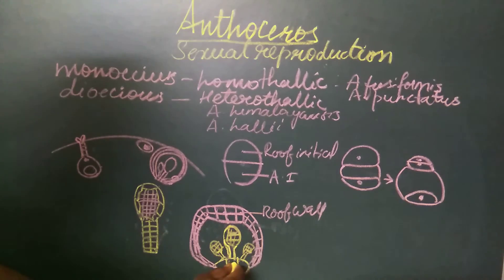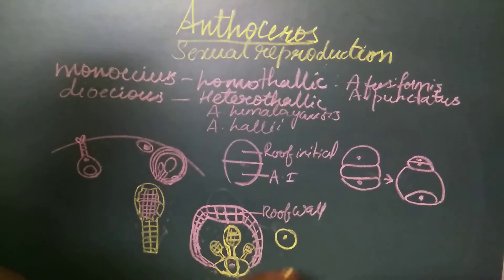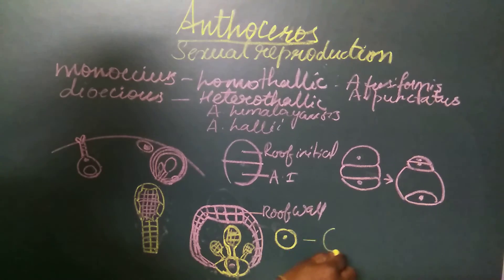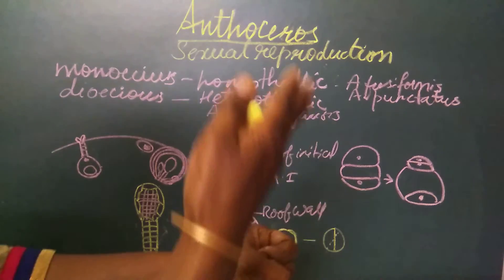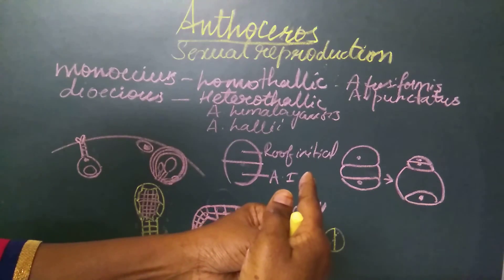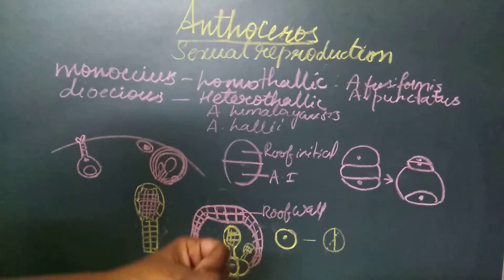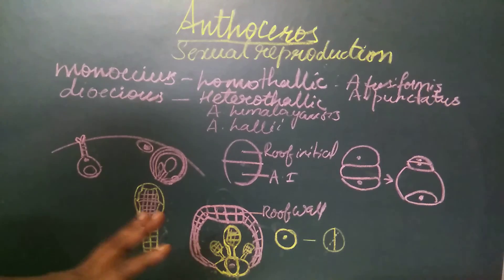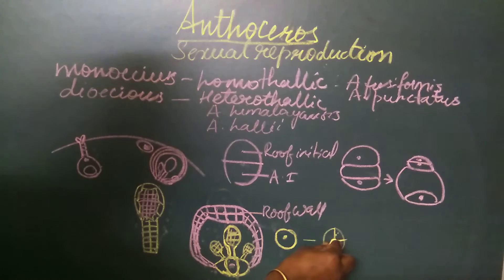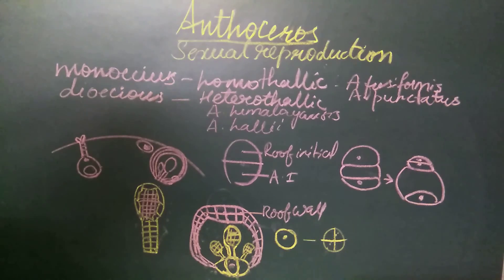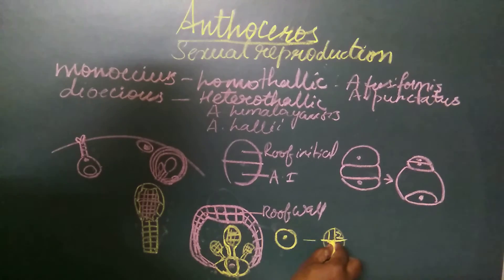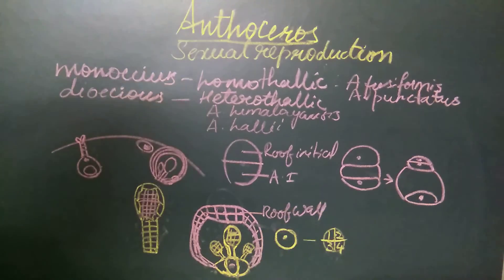The anthridial cell divides by two vertical walls at right angles to one another: the first vertical wall forms two cells, and the second vertical wall at right angles forms four cells. After these two vertical divisions, four cells are formed. Another transverse division then occurs, resulting in eight cells arranged in two tiers of four cells each.